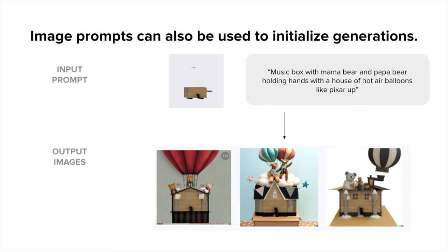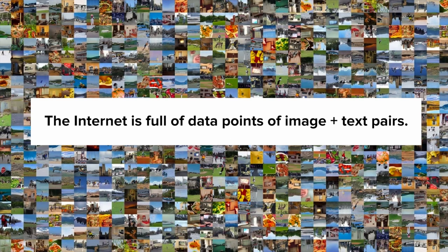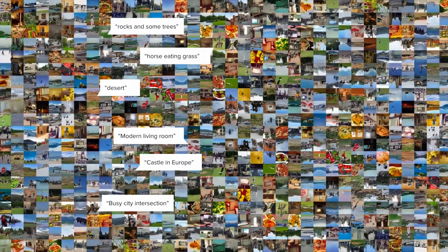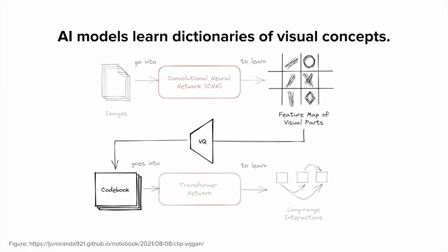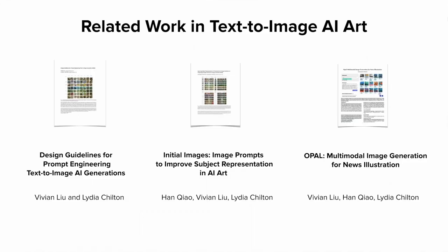AI models achieve this diversity of visual concepts because they've been trained on literally hundreds of millions of text and image pairings. They learn dictionaries of visual concepts that they can access, combine, and remix into a near-infinite number of images. When I first began working on this topic in 2021, there were few tools available. Since 2022, tools like Stable Diffusion, DALL-E, and Midjourney have greatly improved both quality and access. Much of the design guidelines I'll present build off papers I've published, available on ArXiv or the ACM Digital Library.